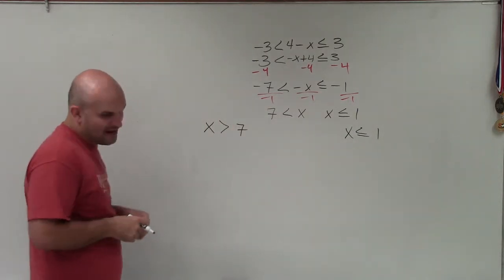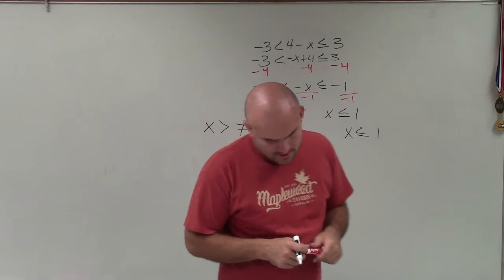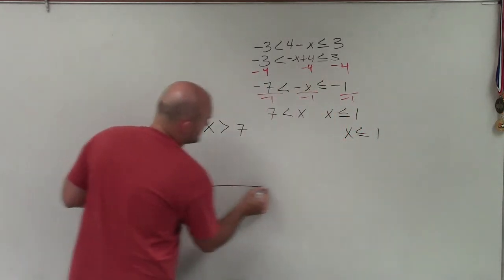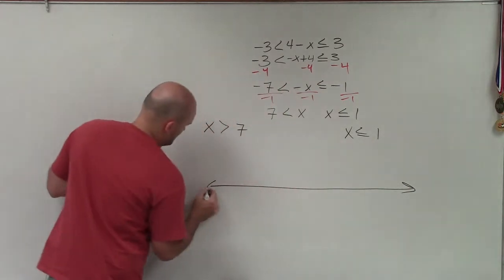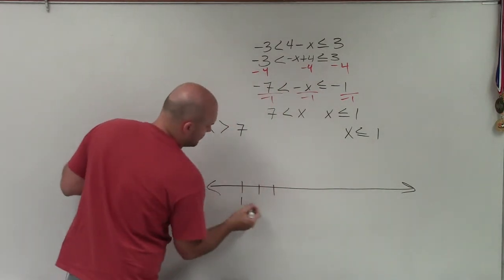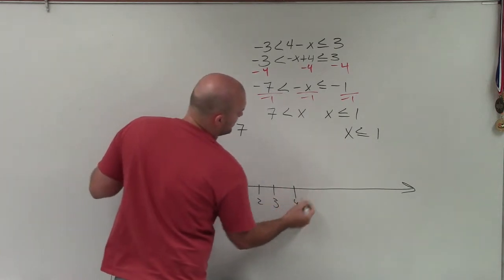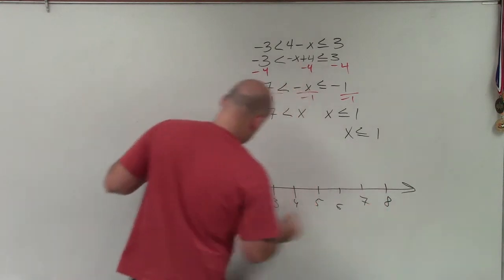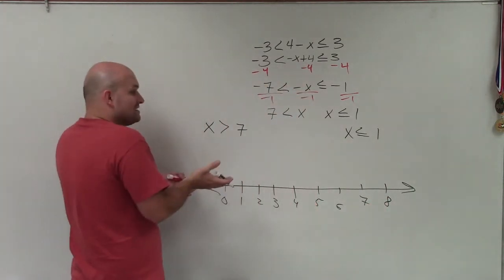So now, to go ahead and graph this, what I'm simply going to do is just go and graph each one of these solutions separately. OK? So we need to make sure we include 1, 2, 3. So it's 1, 2, 3, 4, 5, 6, 7. And let's do 8. And let's do 0.